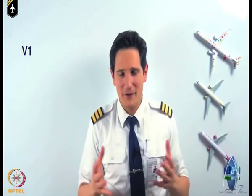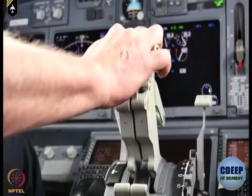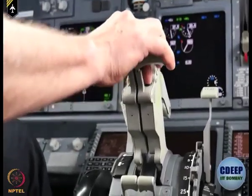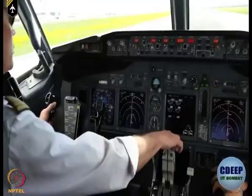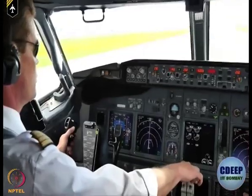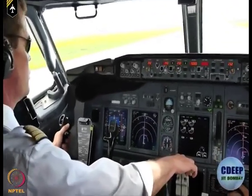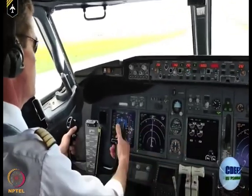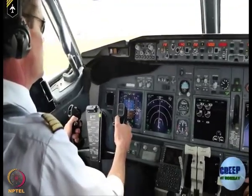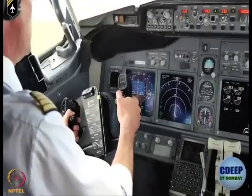This is one of the reasons why the captain keeps his hands on the throttle until the pilot monitoring calls out V1, and then moves his hands away from the throttle to avoid inadvertently aborting the takeoff after V1 in case of a failure.